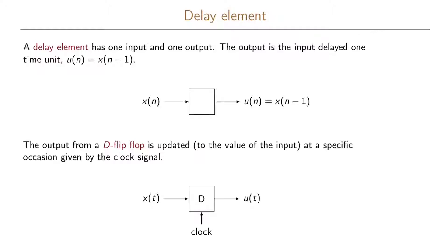Looking closer at the delay element: it has one input and one output, and the definition is that the output is the input delayed one time unit. So the sequence u(n) is the sequence x(n-1). For example, we could have a 1 at x(n) and a 0 at u(n), and in the next time instance this 1 at the input will be shifted to the output.